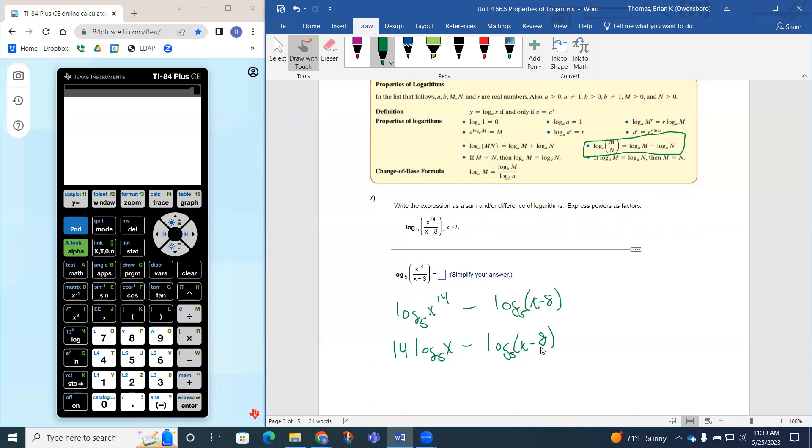And this is connected by subtraction, and we don't have any properties up there that look like that. We do have subtraction over here, but notice how it's a log and a log. Now, this is one log with x minus 8 inside of it. So this is actually simplified.